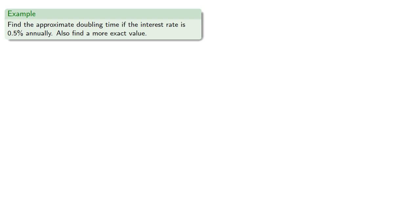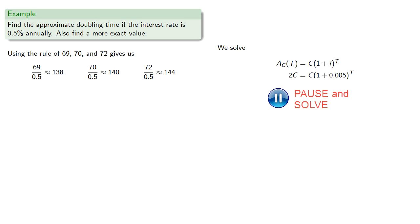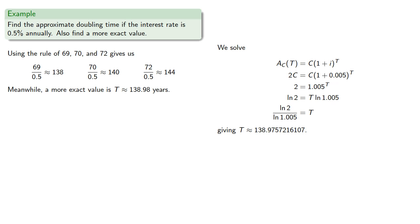So it never hurts to try out a concrete example. Suppose we have an interest rate of 0.5%. So again, using the rule of 69, 70, and 72, we find. And we can find the exact value by. And so our doubling time is about 138.98 years, and this time the rule of 69 gives us the best instruction for this approximation.